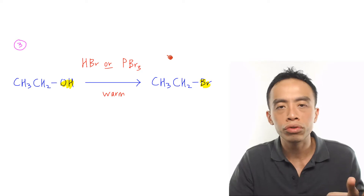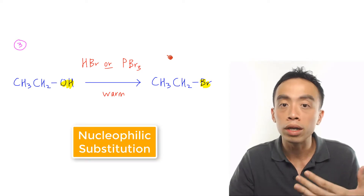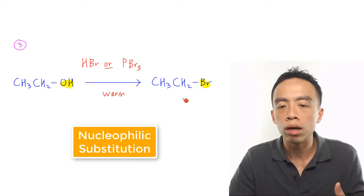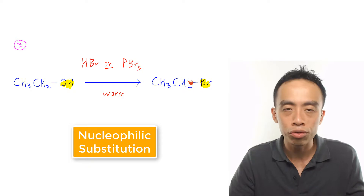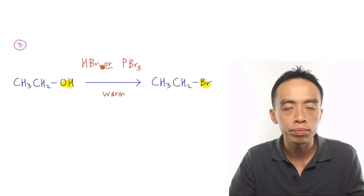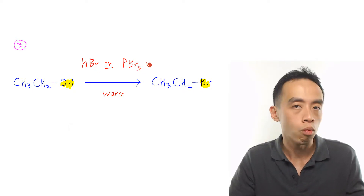Major reaction number 3 of alcohol is again a nucleophilic substitution, this time to form a bromoalkane. This is done using HBr or PBr3, warm.